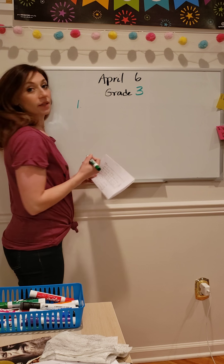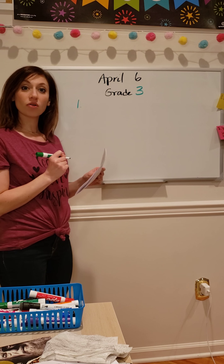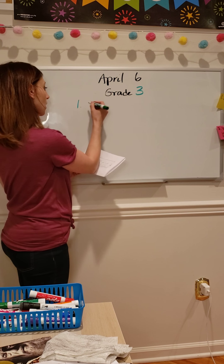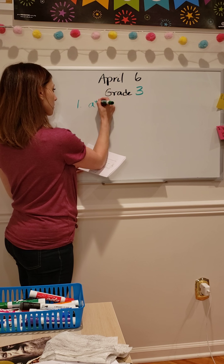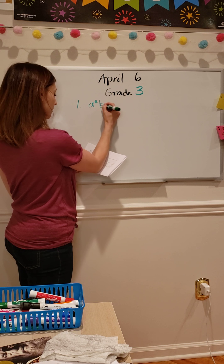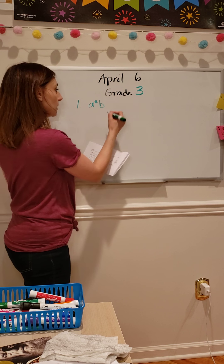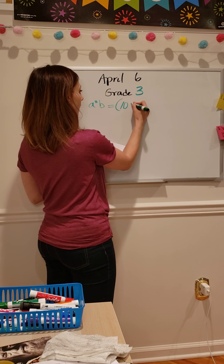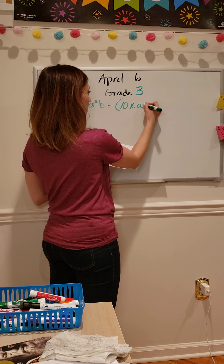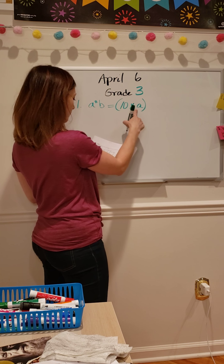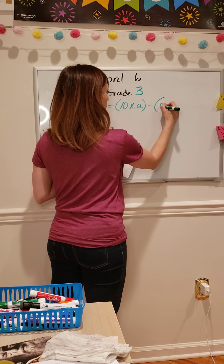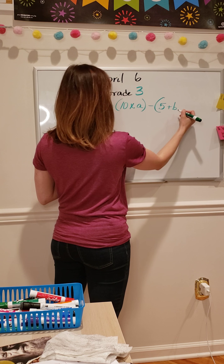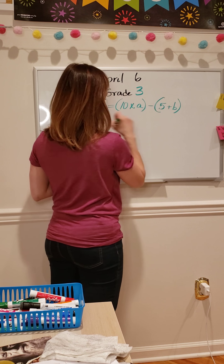Number 1, we have a secret code problem. They give us the formula: A★B means 10 times the number in place of A, minus 5, plus the number in place of B.